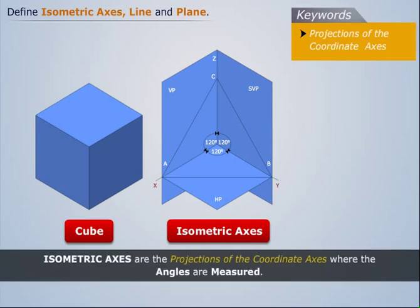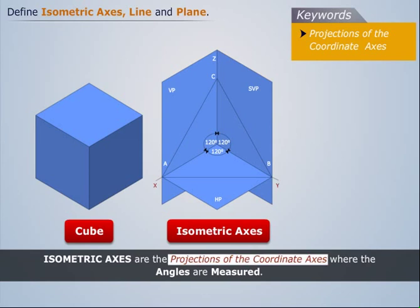Thus isometric axes are the projections of the coordinate axes where the angles are measured.